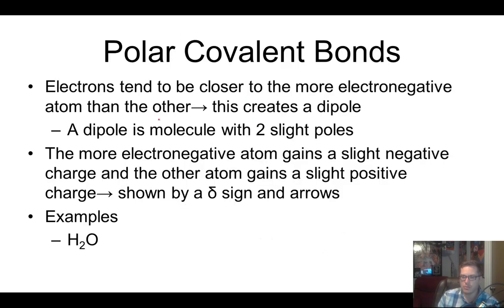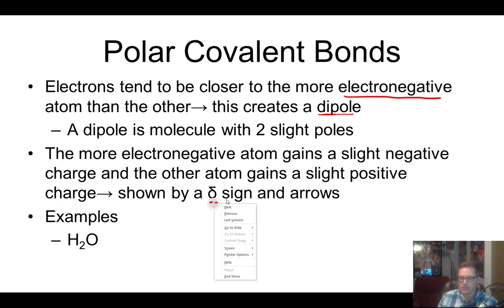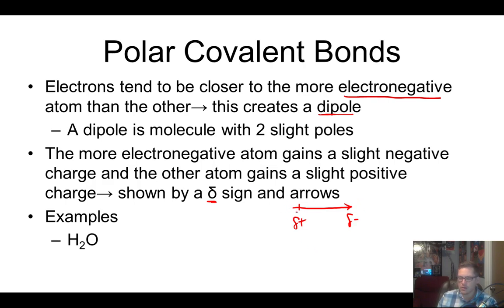In a polar covalent bond, the electrons will be closer to the electronegative atom, and we call this a dipole. 'Di' means two, so there are two poles — one side is positive and one side is negative, and they always come in that pair. The more electronegative atom always has the slight negative, and the other will have the slight positive charge. We use the delta symbol for partial charges, or we can use arrows — draw an arrow pointing toward the side with the electrons and put a plus on the positive side. Most of the time you do one or the other, sometimes both.